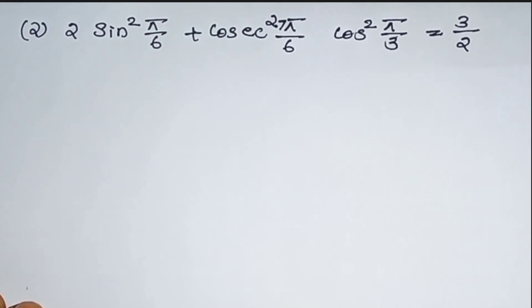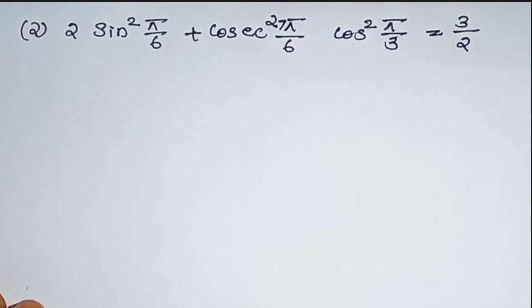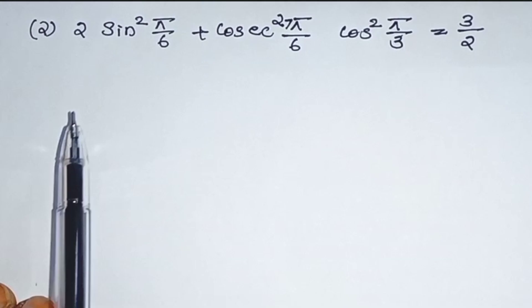Second question. Prove that 2 sin square pi by 6 plus cos square 7 pi by 6 minus cos square pi by 3 is equal to 3 by 2.